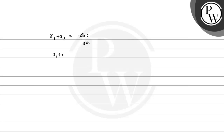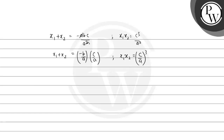So x₁ + x₂ = −b/a × c/a = −(b/a)(c/a). Since alpha + beta = −b/a and alpha·beta = c/a, we get x₁ + x₂ = −(alpha + beta)·(alpha·beta), and x₁·x₂ = (c/a)³ = (alpha·beta)³.